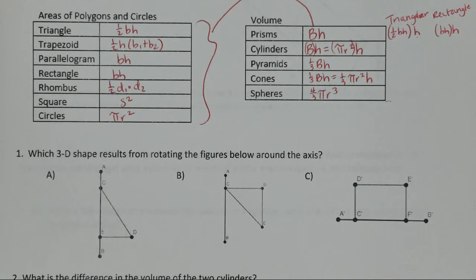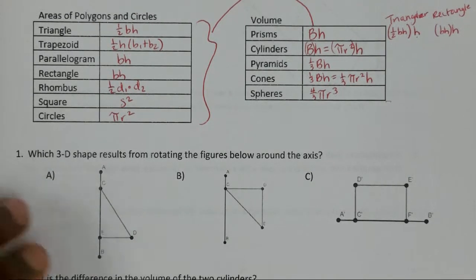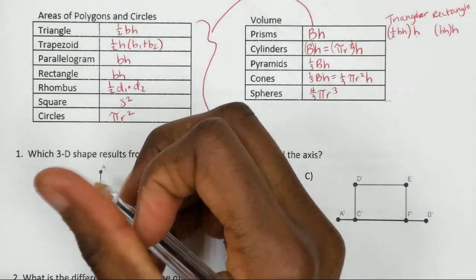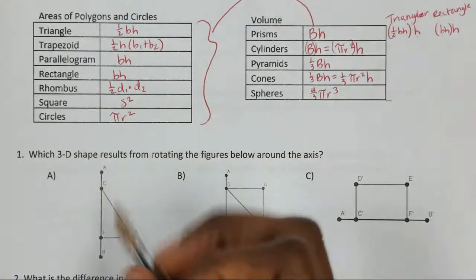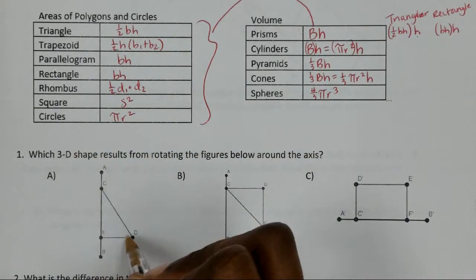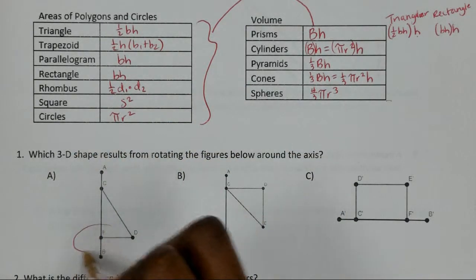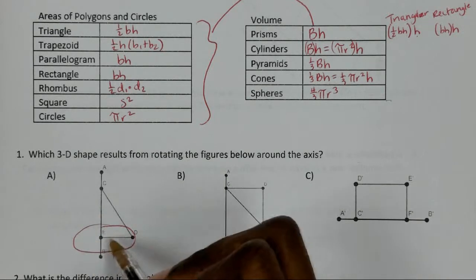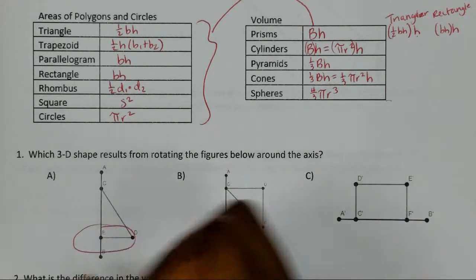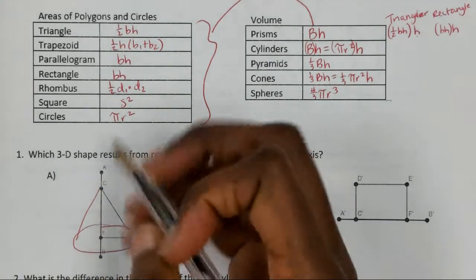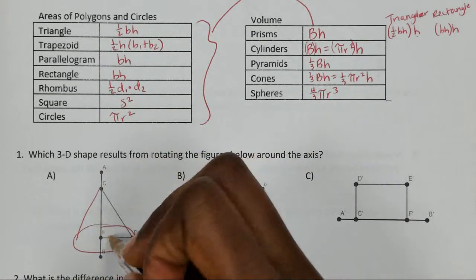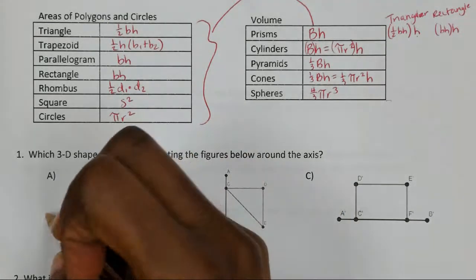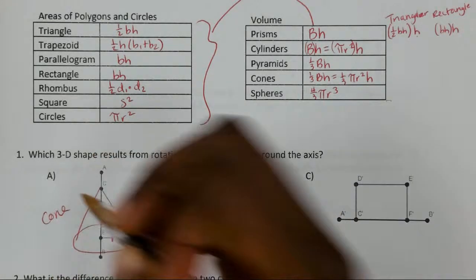The first problem asks which shape results from rotating a figure around an axis. The first figure would create a curved surface and a flat circular surface, making a cone. The radius and height are identified on the shape, so the answer is a cone.